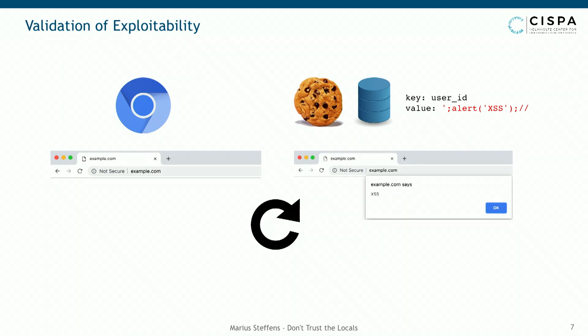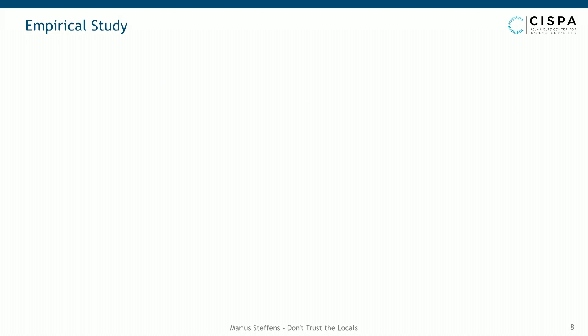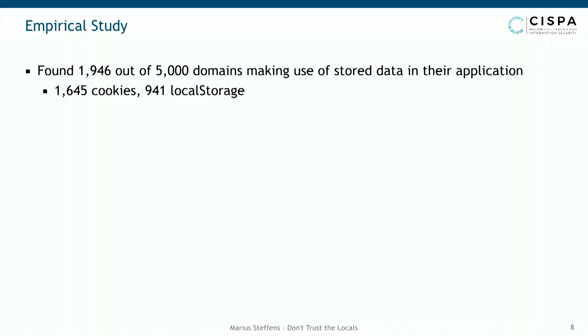Having this automated pipeline — from finding data flows, to building exploit candidates, to verifying they're persistently executed within a victim's browser when stored in a client-side database — we can now turn to a large-scale study. We did an empirical study using the Alexa top 5,000 most prominent applications. We found that around 2,000 of the applications actually make use of persisted data somewhere within their application.